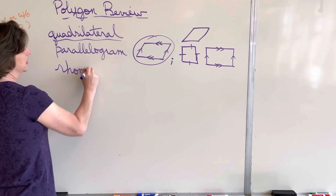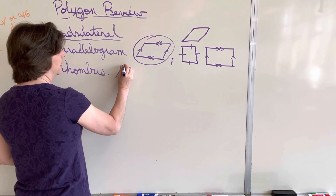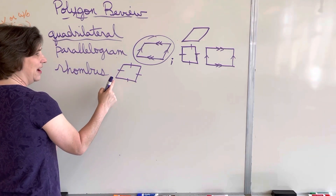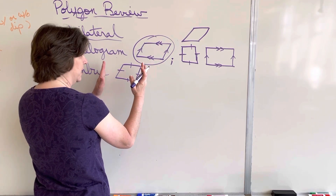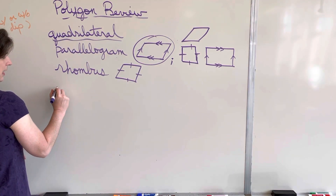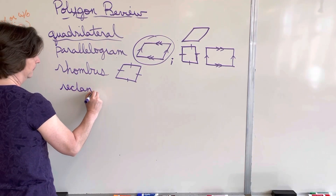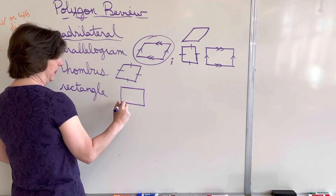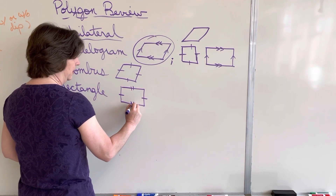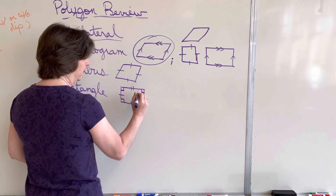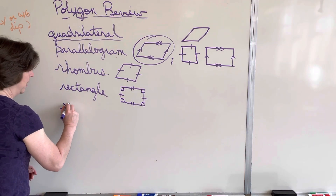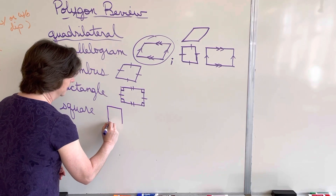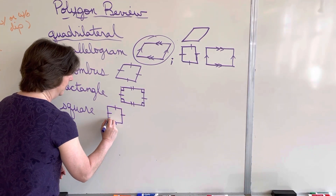Our next shape is a rhombus. A rhombus is a four-sided figure with four equal sides, but it does not have angles that are 90 degrees — it's like a square that got squashed. The next one is a rectangle. It's a parallelogram with opposite sides that are congruent and four right angles. Then we have a square: it's a parallelogram, so opposite sides are parallel, it has four equal sides like a rhombus, but it also has four right angles.